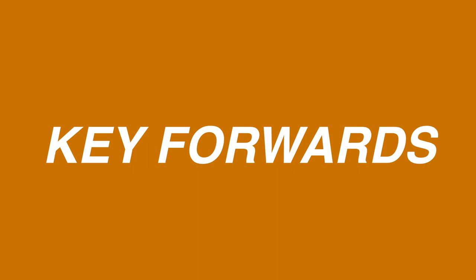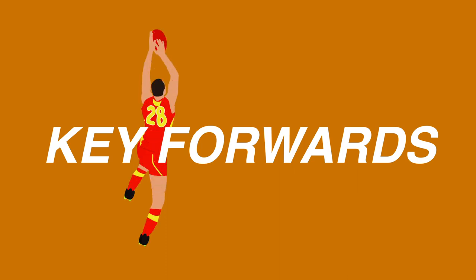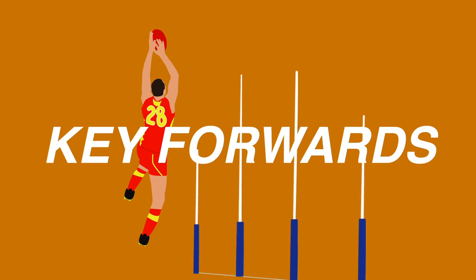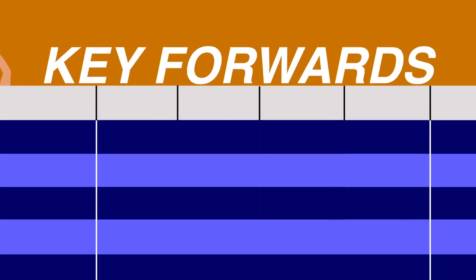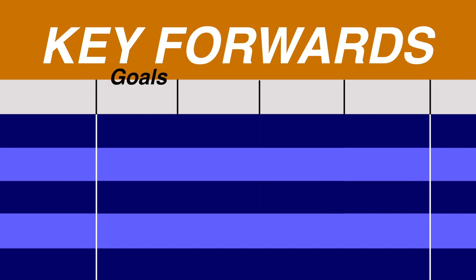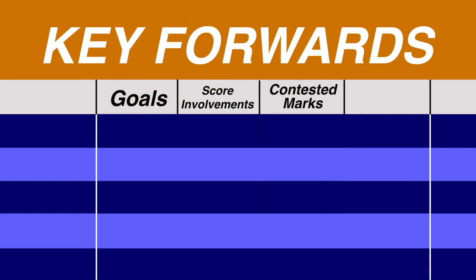These were perhaps the easiest spots on the team to pick, as the role of key forwards is the most clear cut. You want your talls to be pulling down big grabs inside 50, and if they're not hitting the scoreboard themselves, they're setting up shots for the little guys. The stats chosen to represent this were goals, score involvements, contested marks, and marks inside 50.